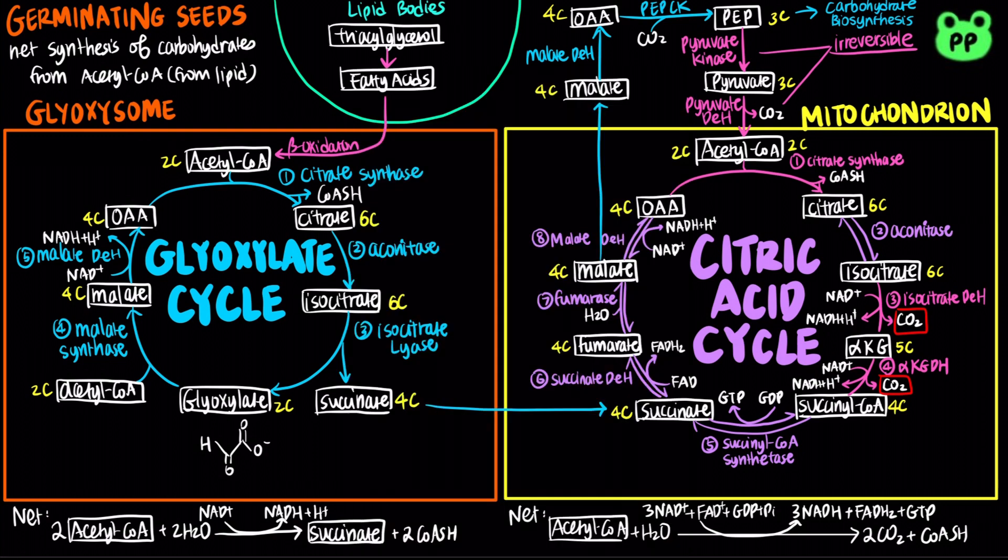In summary, the glyoxylate cycle shares the first two steps and the last step with citric acid cycle. It bypasses the two oxidative decarboxylation steps by the enzymes isocitrate lyase and malate synthase, resulting in a net production of succinate from two acetyl-CoA, which can then funnel into citric acid cycle, resulting in a net production of oxaloacetate and subsequently phosphoenolpyruvate, achieving net synthesis of carbohydrates from lipids.